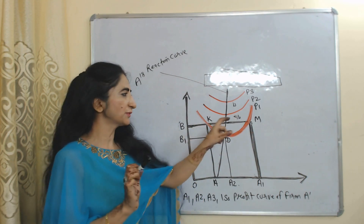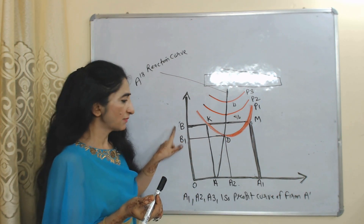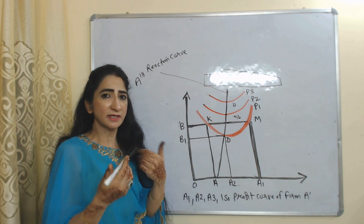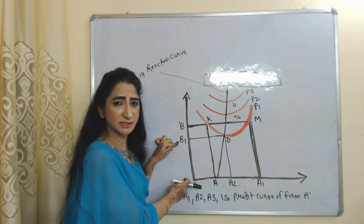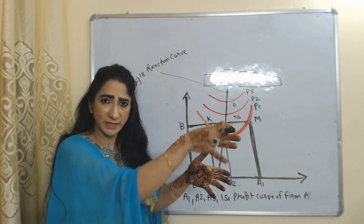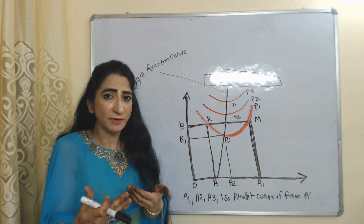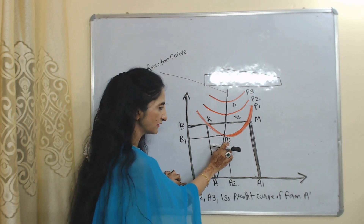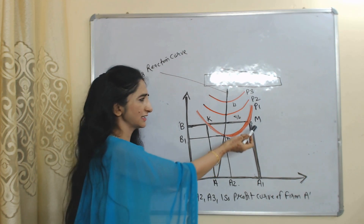Suppose our initial equilibrium point is M. Here B is taking price OB but A is taking price OA1. Now we assume firm B reduces its price from OB to OB1. As firm B reduces price, profit of A will also reduce because customers of A will go to B. In order to maintain the same amount of profit, firm A will also reduce its price from OA1 to OA2, and our new equilibrium point is D, where firm A is getting the same level of profit as at point M.